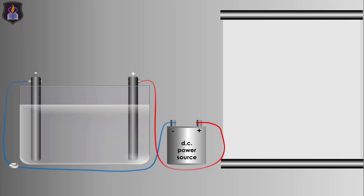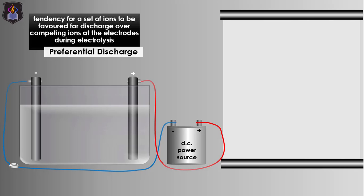Welcome back. First of all, what do you understand by the term preferential discharge or selective discharge of ions? It is the tendency for a set of ions to be favored for discharge over competing ions at the electrode during electrolysis.